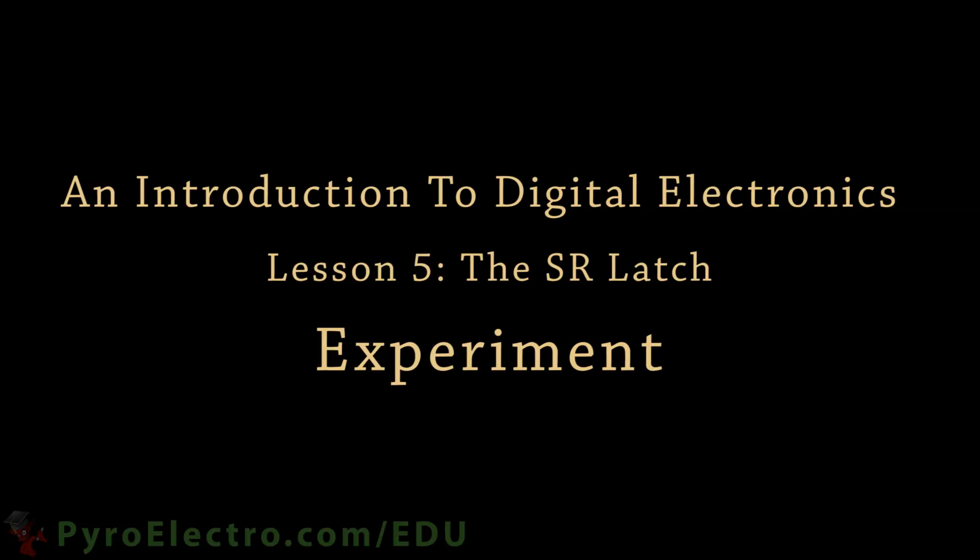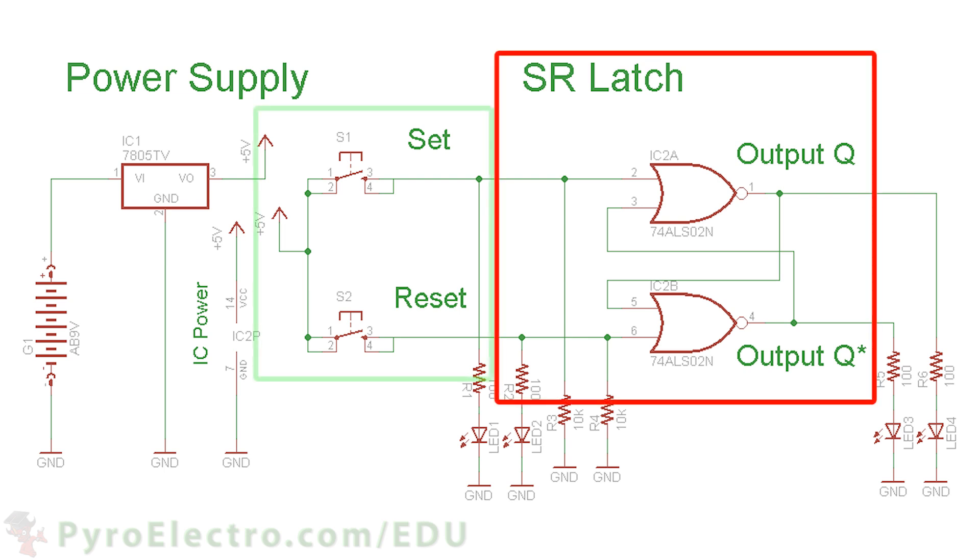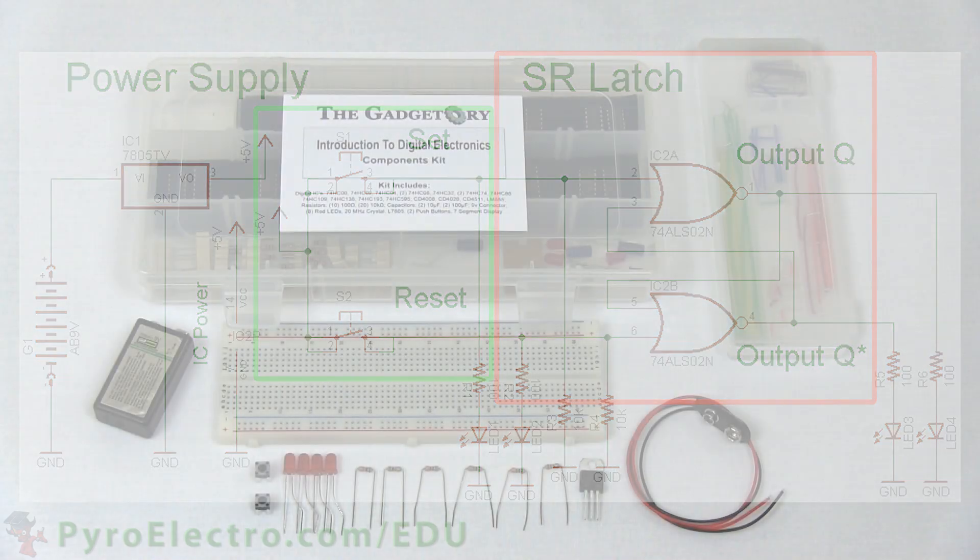After all that theory, your brain probably wants a break and some practical medicine to see how this stuff really works. First, we're going to want to build an SR latch using NOR gates. Here's the full schematic for this experiment. You can see the SR latch here, and we'll use two push buttons to set or reset the latch. To build this circuit, you'll need the jumper wire kit, a breadboard, and from the components kit,